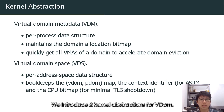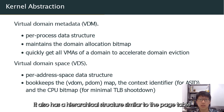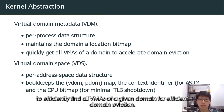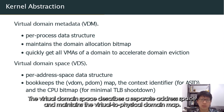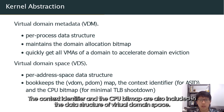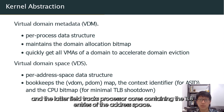We introduce two kernel abstractions for VDOM: the per-process virtual domain metadata, which maintains the domain allocation bitmap and has a hierarchical structure similar to the page table to efficiently find all virtual memory areas of a given domain for efficient domain eviction. The virtual domain space describes a separate address space and maintains the virtual-to-physical domain map. The context identifier and the CPU bitmap are also included — the former for ASID assignment, and the latter for tracking processor cores containing the TLB entries of the address space.